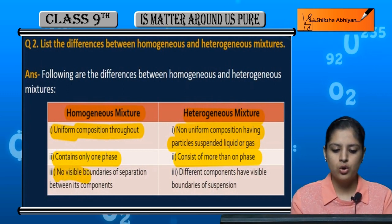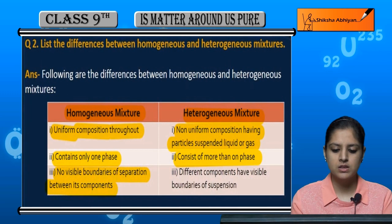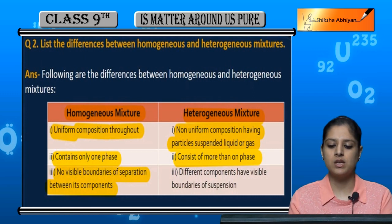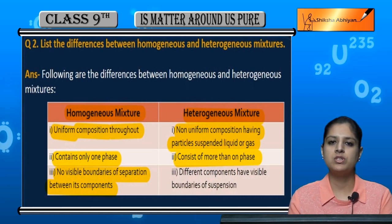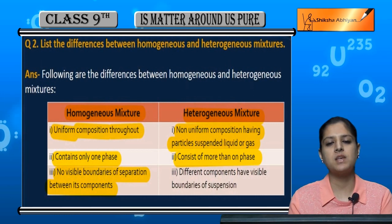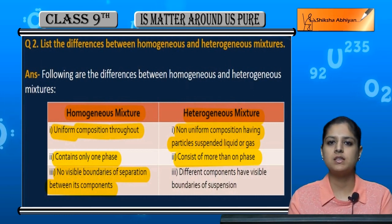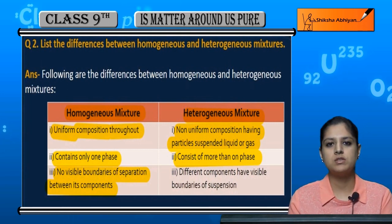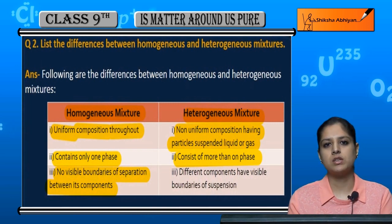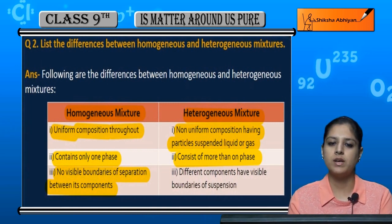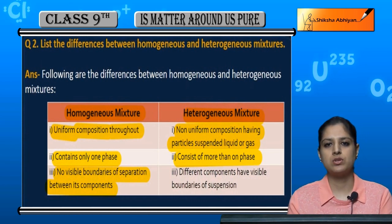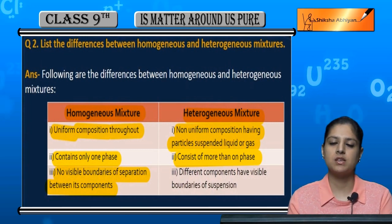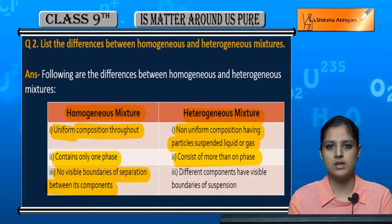Third difference: homogeneous mixtures have no visible boundaries or separation between their components. You cannot see any boundary or see that the mixture is separated from its components. Because the solute dissolves so well, there is no visible boundary, and we cannot distinguish the solute from the solvent.